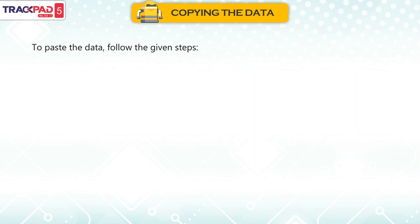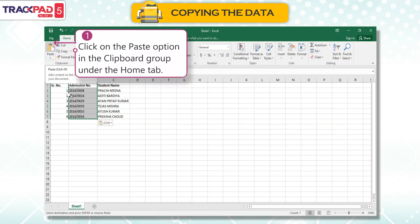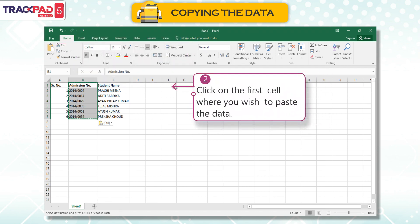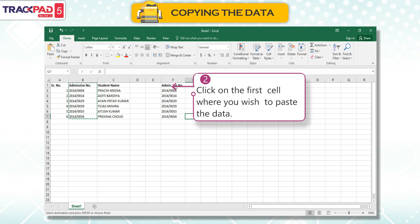To paste the data, follow the given steps. First, click on the paste option in the clipboard group under the home tab. Second, click on the first cell where you wish to paste the data.